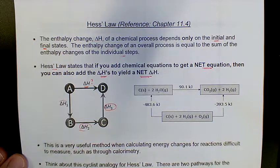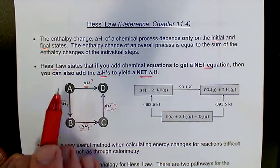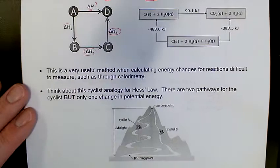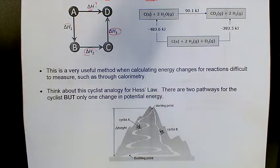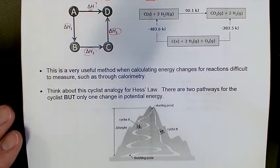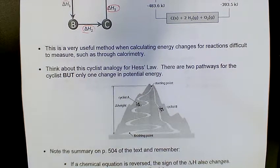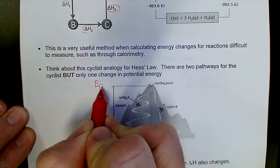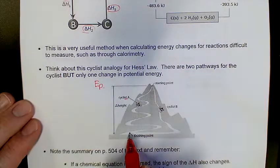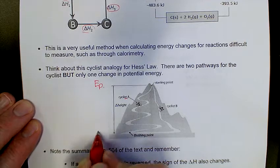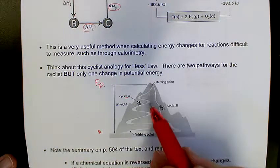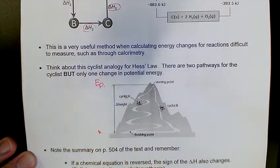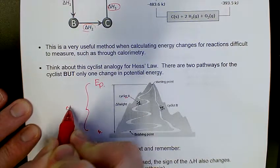So what Hess's law is saying is, regardless of what we did through the day and the various pathways we took, we started and finished at the same position. The pathway we take is completely and totally irrelevant. We can use this for difficult reactions or things that wouldn't be applicable to calorimetry. Another analysis is the cyclist analogy from our textbook. Imagine cyclist A has a starting point with very large potential energy and a finishing point at sea level with very little potential energy.